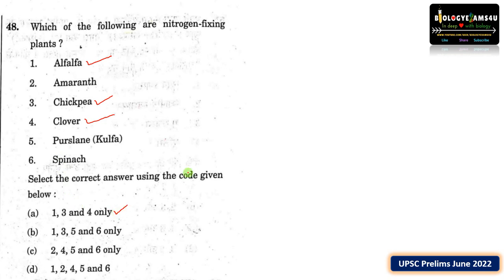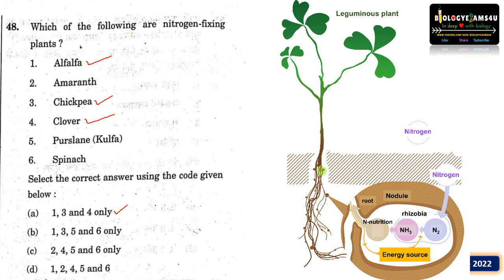The first option — 1, 3 and 4 — is the correct answer. Leguminous plants have root nodules, which are sites where a symbiotic bacterium called Rhizobium is cultured by the plant. This bacterium converts atmospheric nitrogen to ammonia, then to other forms available for plant absorption — a process called nitrogen fixation. This symbiotic association, where the plant provides food and shelter for Rhizobia and in turn receives nitrogen nutrition, is the speciality of leguminous plants and makes them fast growers.